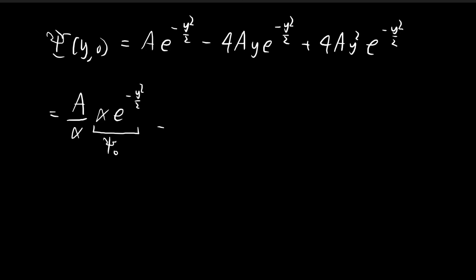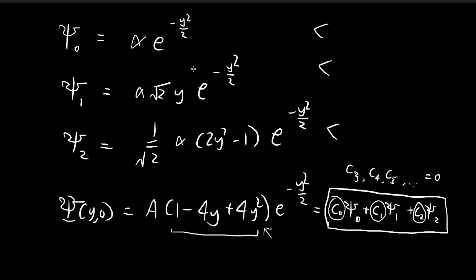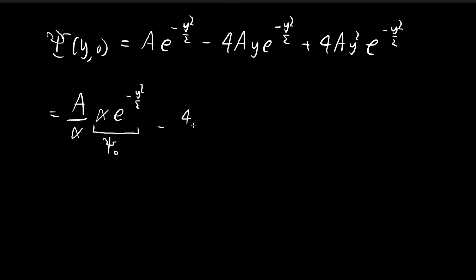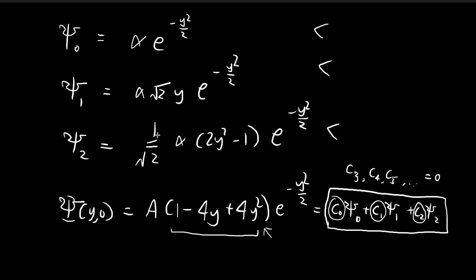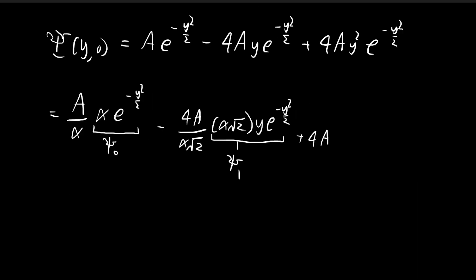For the next term, we need a factor of α · √2. I divide by (α√2) and multiply back by (α√2). The resulting expression — α√2 · y · e^(−y²/2) — matches the form of ψ₁. So this term is actually ψ₁.